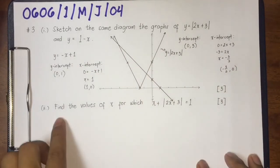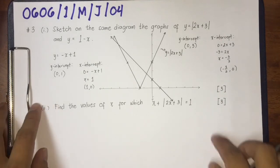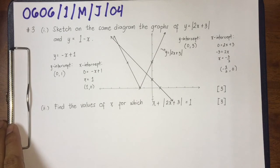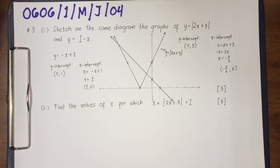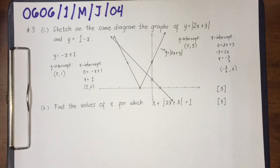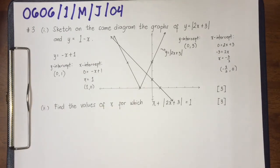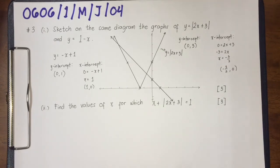The second problem is: find the values of x for which x plus the modulus of 2x plus 3 equals 1. If you notice, this is related to the first problem. Usually in IGCSE additional mathematics, part (ii) is always connected with part (i), so I can use the answers from part (i) to answer part (ii). I can solve this algebraically or using the graph — I'll show both methods.